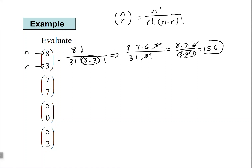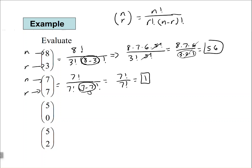Let's look at 7 above 7, where n equals 7 and r equals 7. We have 7 factorial over 7 factorial times (7 minus 7) factorial. Since 7 minus 7 is 0, and 0 factorial equals 1, we're left with 7 factorial over 7 factorial, which is 1. This is a special case: any time n and r are equal, evaluating the binomial coefficient gives a result of 1.